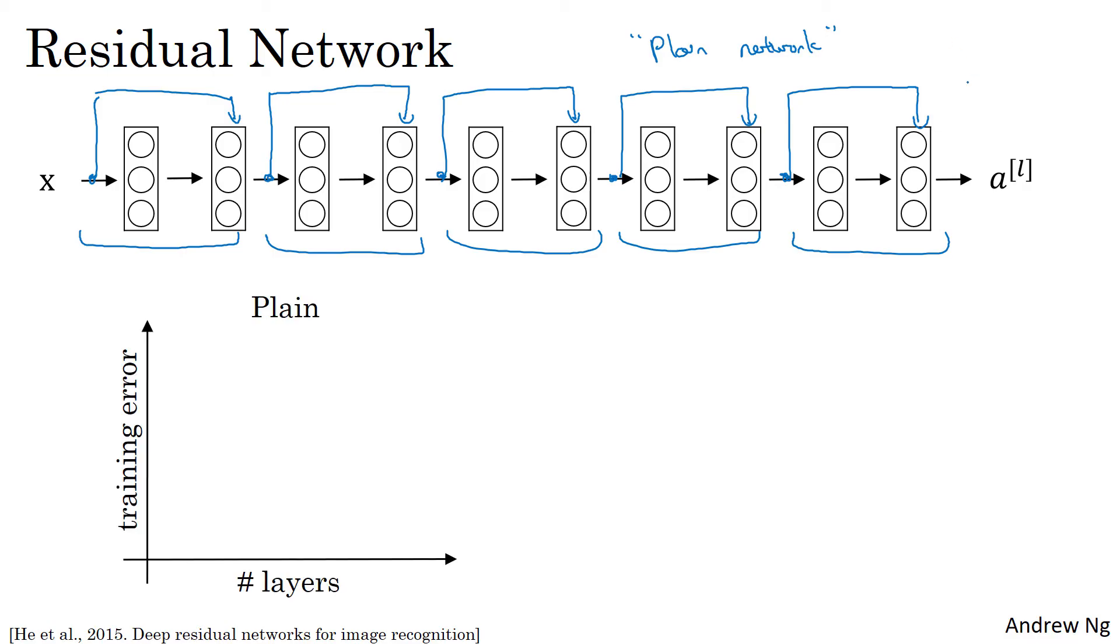And it turns out that if you use a standard optimization algorithm, such as gradient descent or one of the fancy optimization algorithms to train a plain network, so without all the extra residual, without all the extra shortcuts or skip connections I just drew in, empirically you find that as you increase the number of layers, the training error will tend to decrease after a while, but then they'll tend to go back up.